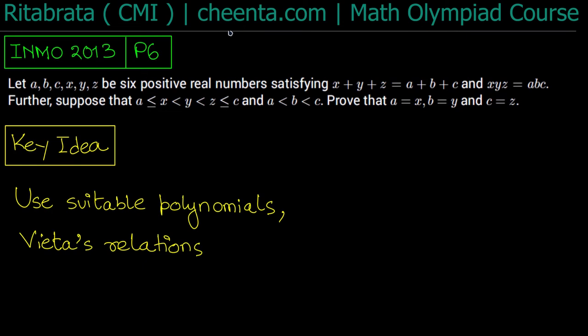From the given expressions x + y + z and xyz, this really reminds us of Vieta's relations. If I take a polynomial in some variable with roots x, y, z, then the sum of roots is x + y + z, and we can relate it to the coefficients: x + y + z, xy + yz + zx, and xyz.